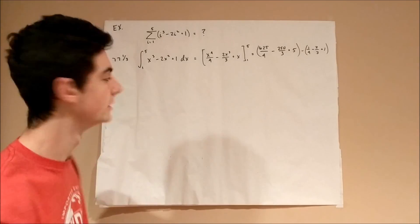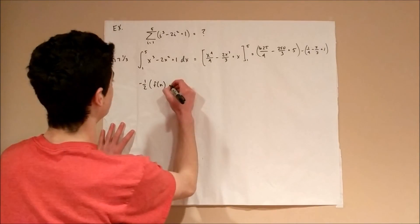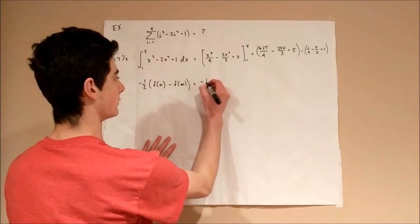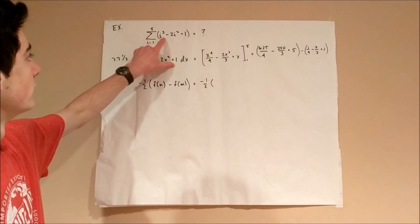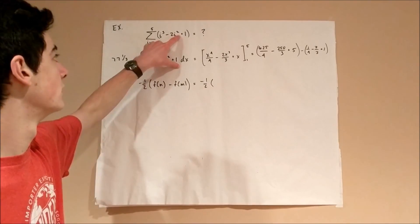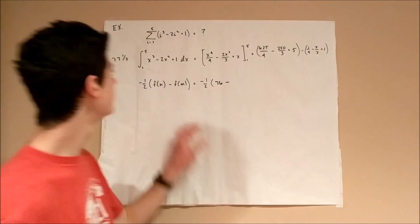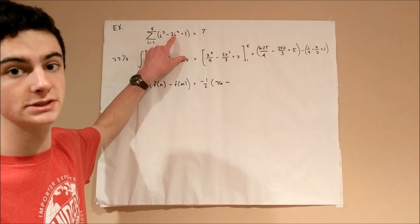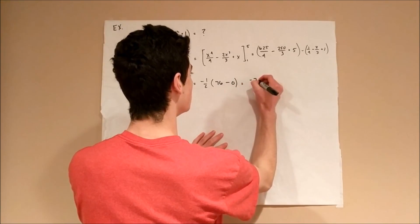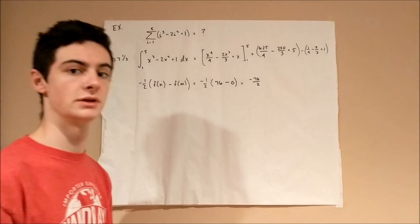The next component is negative one-half times f(n) minus f(m). Plugging in 5: 125 minus 50 plus 1 equals 76. Plugging in 1: 1 minus 2 plus 1 equals 0. So we get negative one-half times 76 minus 0, which gives negative 76 over 2, equaling negative 38.